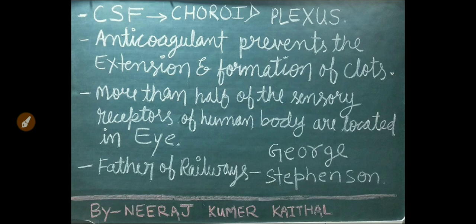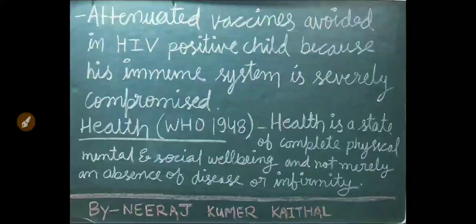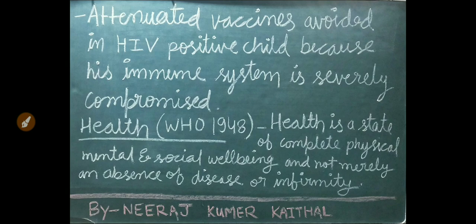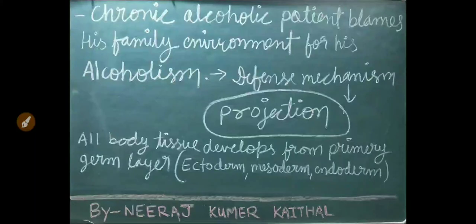More than half of the sensory receptors of the human body are located in the eye. Attenuated vaccines are avoided in HIV-positive children because the child's immune system is severely compromised. Definition of health by the WHO given in 1948: health is a state of complete physical, mental, and social well-being and not merely an absence of disease or infirmity. A chronic alcoholic patient who blames his family environment for his alcoholism is using the projection defense mechanism.